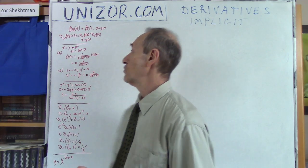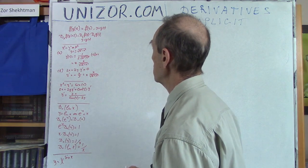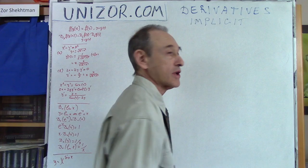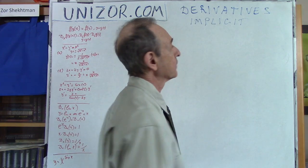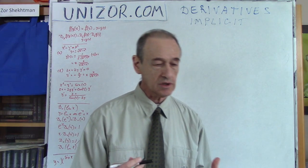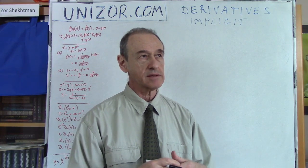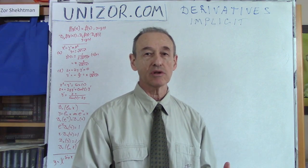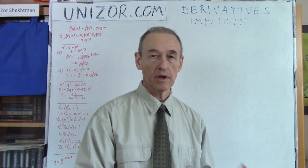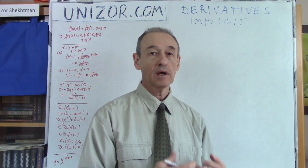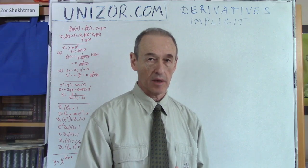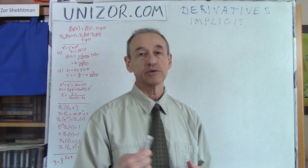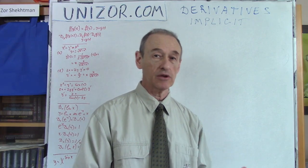What we're talking about today is so-called implicit differentiation. It's nothing special — it's just an application of things we have already studied: the differentiation of compound functions, the chain rule.